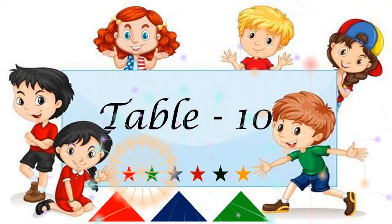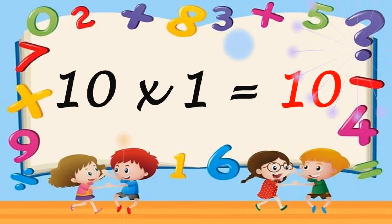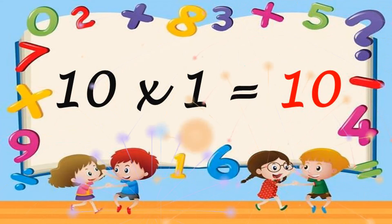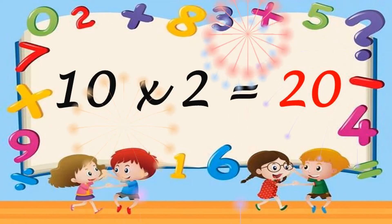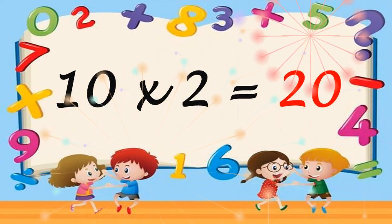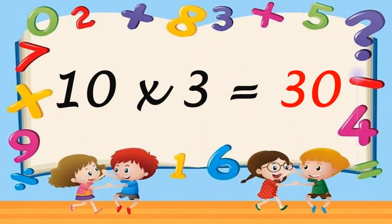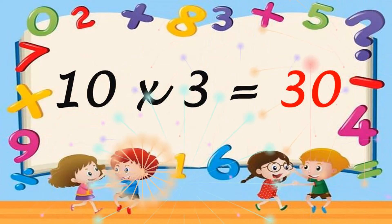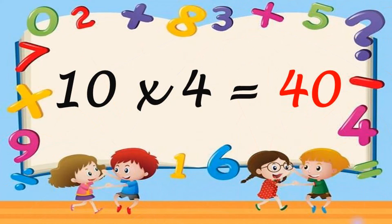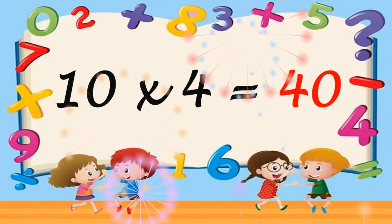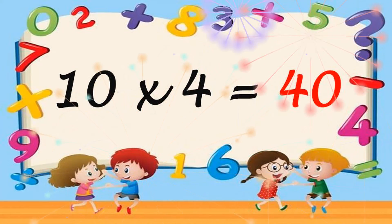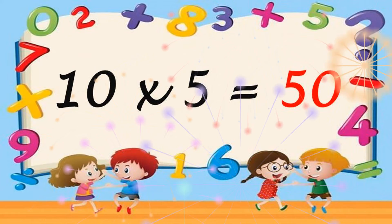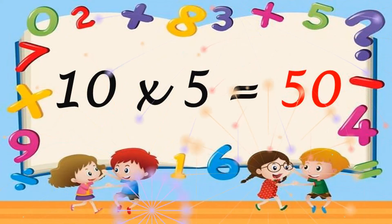Table of 10. 10 1s are 10. 10 2s are 20. 10 3s are 30. 10 4s are 40. 10 5s are 50.